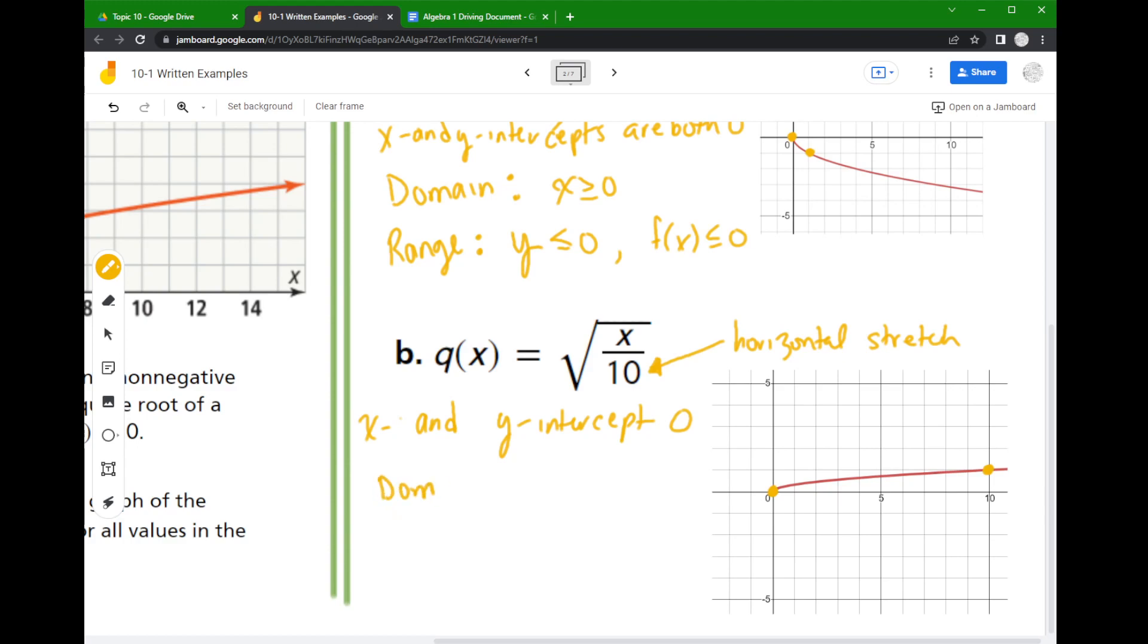Talking about our domain, our domain is still the same thing because it's still on the right hand side of our graph. And then our range here is very similar to the original graph that we looked at where it's y is greater than 0, and that's because it's going uphill, it's an increasing graph.